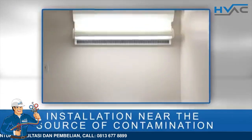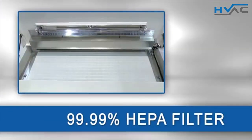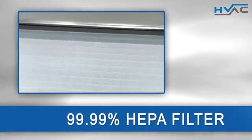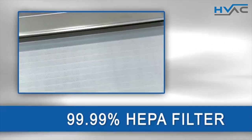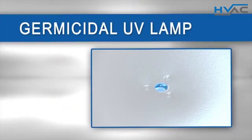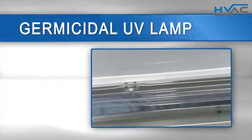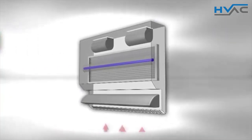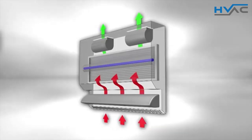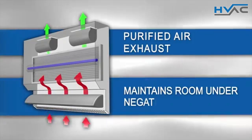The HEPA net will capture air at the source of airborne contaminated particulates above the patient's head, filtering contaminants with a 99.99% HEPA filter. The surface of the HEPA filter is radiated continuously by a germicidal UV lamp in order to prevent the growth of bacteria and viruses.